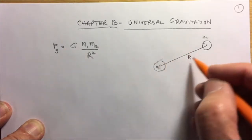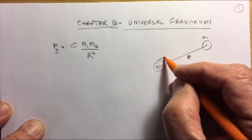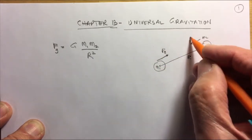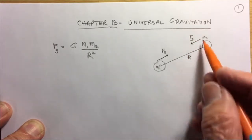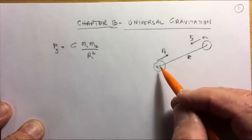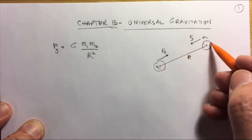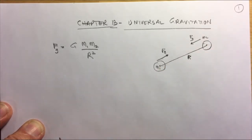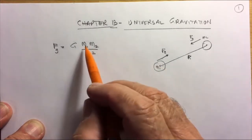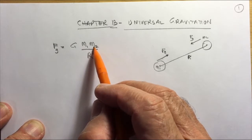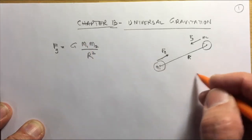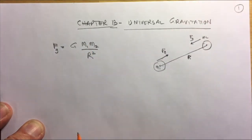The force of gravitational attraction means m2 pulls m1 towards it, and m1 pulls m2 towards it. The forces are exactly equal and opposite — so the Earth pulls the Moon towards it with exactly the same force with which the Moon pulls the Earth. The law states that every particle in the universe attracts every other particle according to this equation.